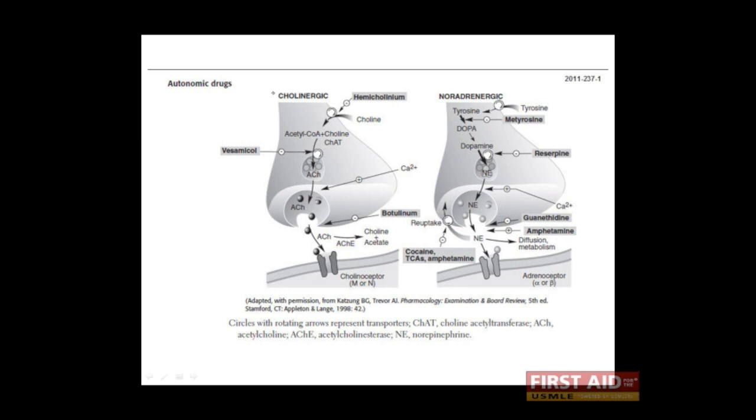Notice that we're going to talk about this in two neuron types: cholinergic neurons, which are simply those neurons which release acetylcholine, and noradrenergic neurons, which are those that release norepinephrine. Let's begin with the synthesis of acetylcholine.